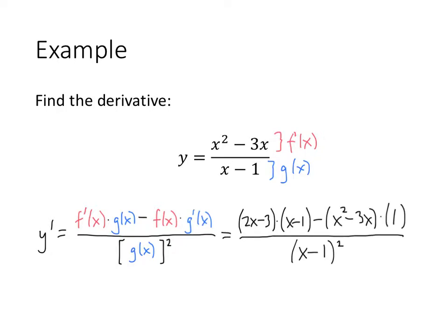Now just like with the previous example, if they ask us to simplify this, then we can multiply out the top, try to see if we can find any common factors to divide out. But unless they ask us to do that, then we can leave it the way it is.